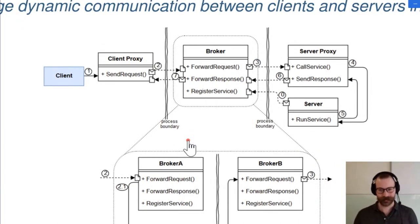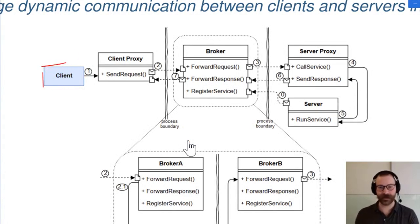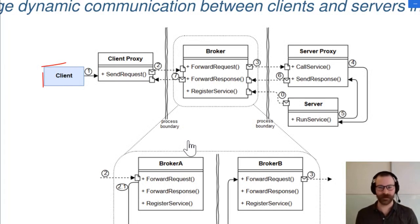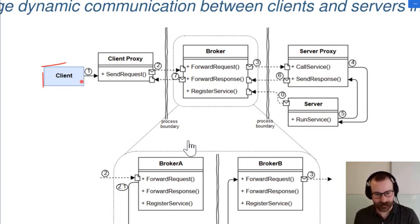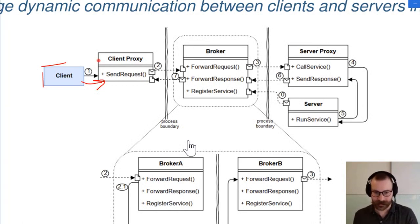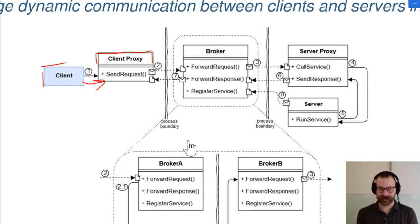Let's look at the depiction. We as a client want to do something. We have a request and we cannot do this request by ourselves — we have to rely on some external service. But we don't know who is the responsible server for this. The client itself just calls some method, and we have a proxy here. The idea of the proxy is: if we can solve this request ourselves, then let's do it locally.